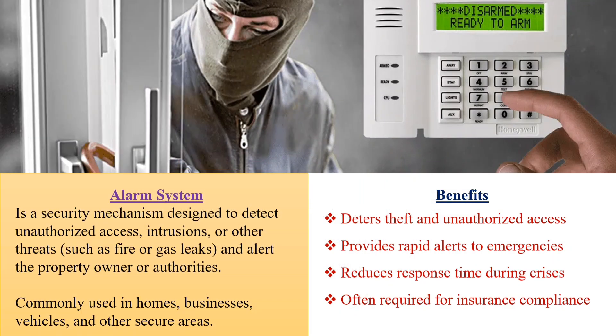An alarm system is a mechanism designed to detect unauthorized access, intrusion, or other threats such as fire or gas leak, to alert the property owner. You can also have an alarm system to alert you on emotional stress, and ones that monitor your blood pressure — that's still an alarm system because it's about your safety. They're commonly used for business purposes, at homes, and in vehicles.